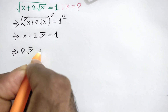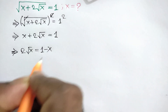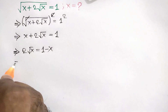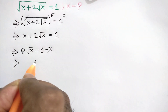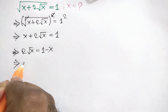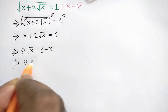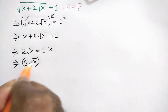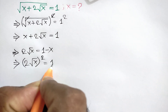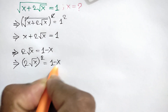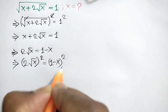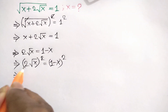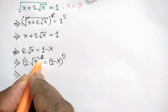Now taking this x to the right side, we will get 2 times square root of x is equal to 1 minus x. Now again squaring both sides, we can write: 2 times square root of x whole square is equal to 1 minus x whole square.